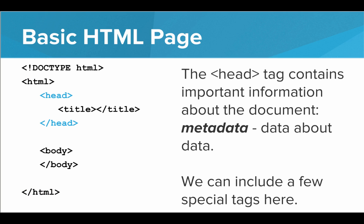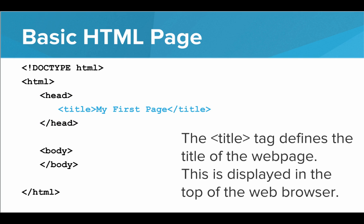Now we have the head tag. The head tag contains important information about the document — it contains metadata. Metadata is data that describes data, so the head is data about the actual page. It's not the page itself; it's just information about the page. There are a few special tags we can include in here. Specifically, we can include the title tag. The title tag defines the title of the web page, which is displayed at the top of the web browser inside the tab.